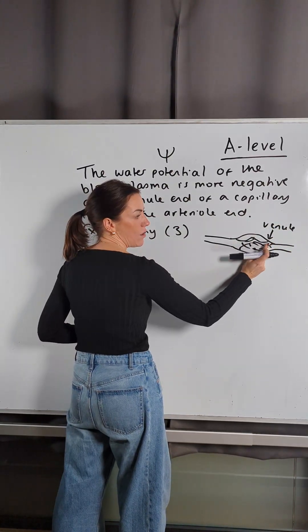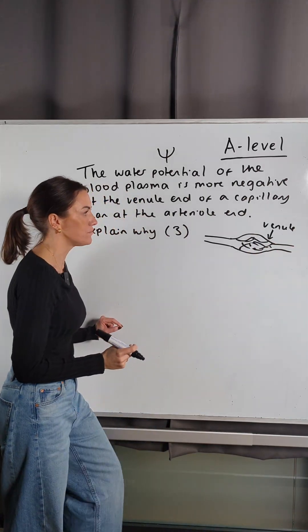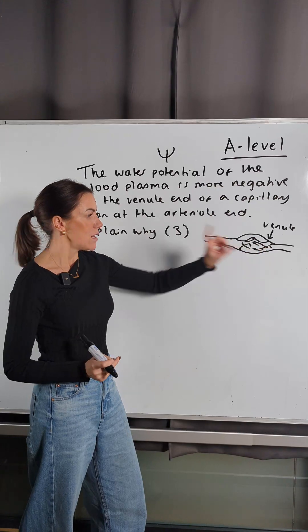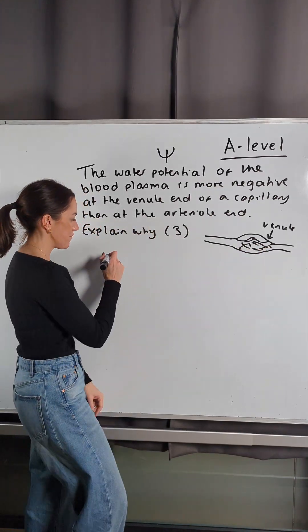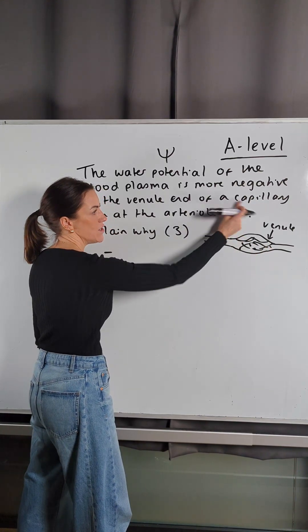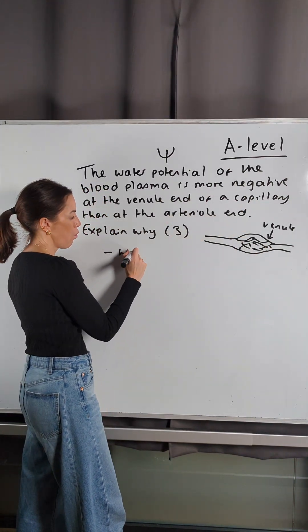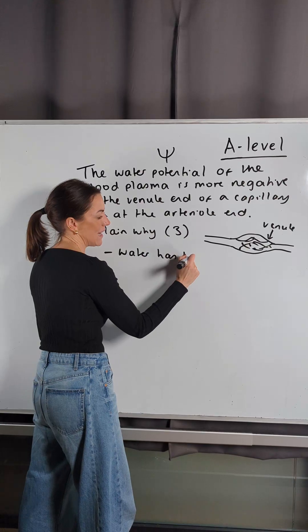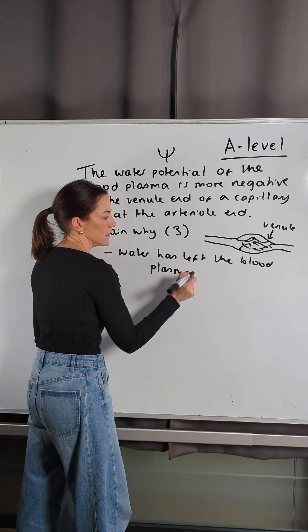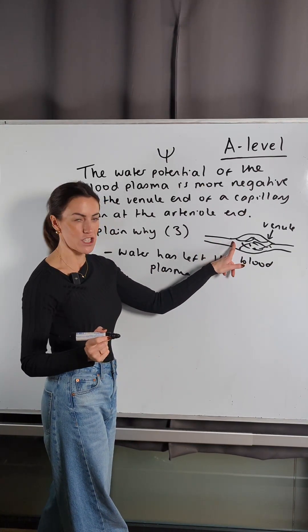But when we talk about the venule end, we're talking about this end where the capillary network is rejoining with the venule. Why is the water potential lower in here? There are two reasons. The first reason is because by the time you get to the venule end of the capillary network, water has left the blood plasma.